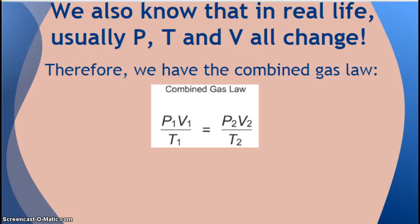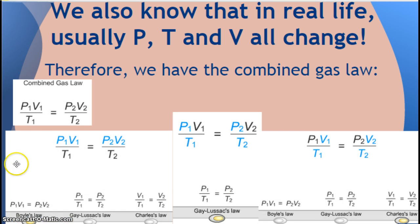But we all know that in real life, usually pressure, temperature, and volume all change. Therefore, we have a combined gas law. So we have to take into account our pressure, volume, and temperature at the beginning and at the end. And it's not random. It actually comes from our previous laws. So Boyle's law, we get the PV equals PV. From Guy-Lussac's law, we get the P over T, P over T. And from Charles' law, we get the V over T, V over T.